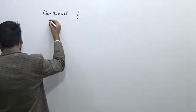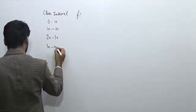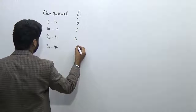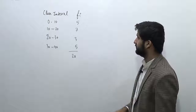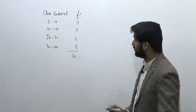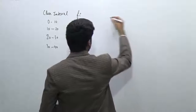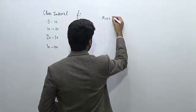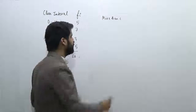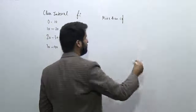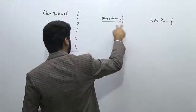Let's start with a simple data: class intervals 0–10, 10–20, 20–30, 30–40. I'm taking very simple data so you don't get confused and can learn easily. I'm going to write the cumulative frequency in two ways — first the more than cumulative frequency, since we're more familiar with that, and then the less than cumulative frequency.